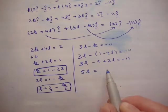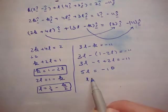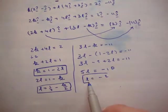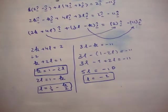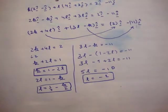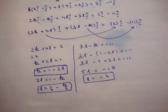5l is equal to minus 10. L is equal to minus 2. I'm just going to check the back of the book and see if that's correct. Minus 2, that's correct.